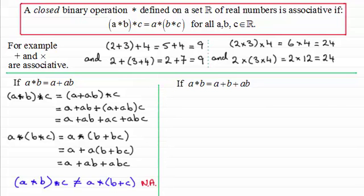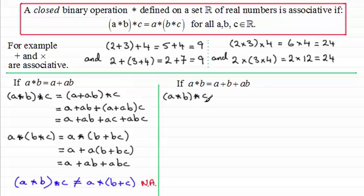You might want to try this next one now that you've seen how I've set this out. Here we've got a★b equals a plus b plus ab. Let's check whether this operation is associative. We've got a★b combined with c. According to this definition, if we do a★b first we get a plus b plus ab, and then this is starred with c.